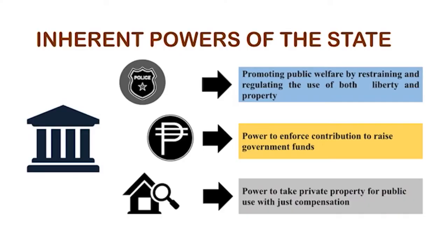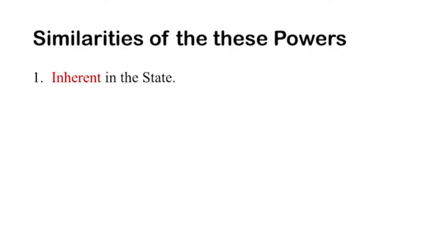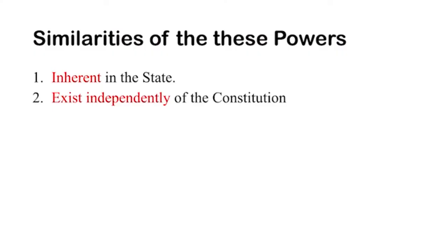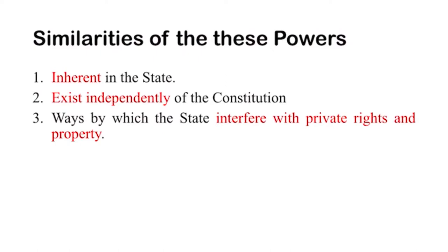There are a few similarities among these powers. First, they are inherent in the state — since the beginning of time these powers already exist with the government. Second, they exist independently of the constitution, meaning we don't have to enact laws for these powers to be exercised. Third, they are the ways by which the state interferes with private rights and property.